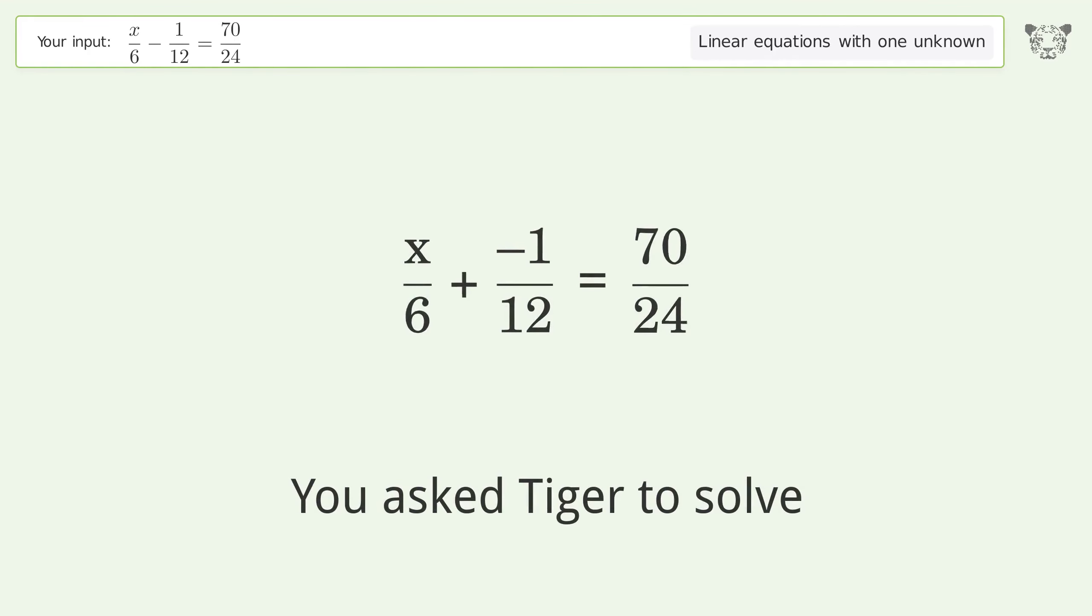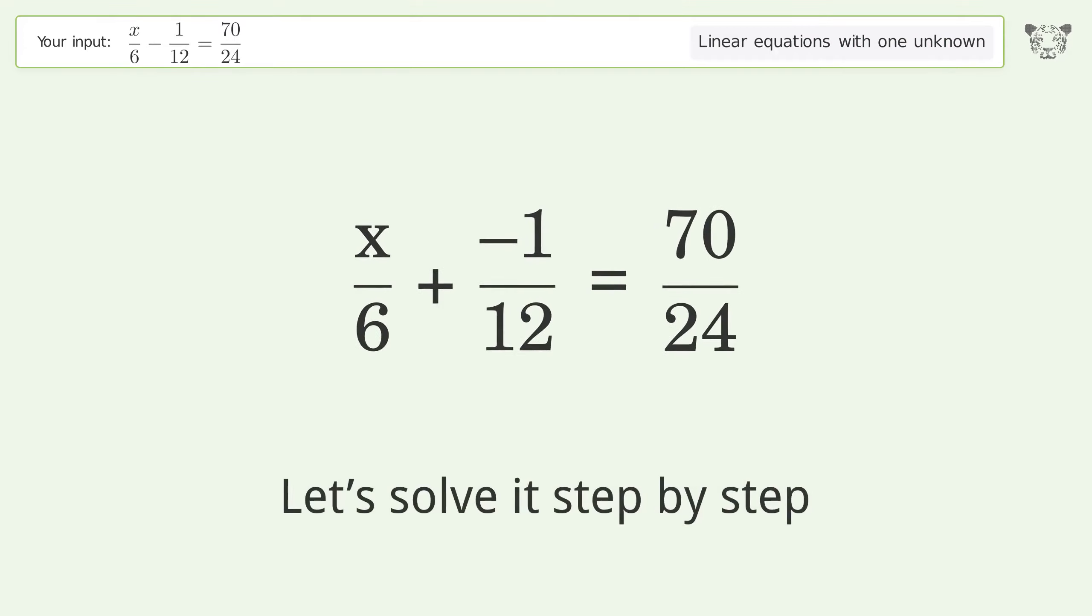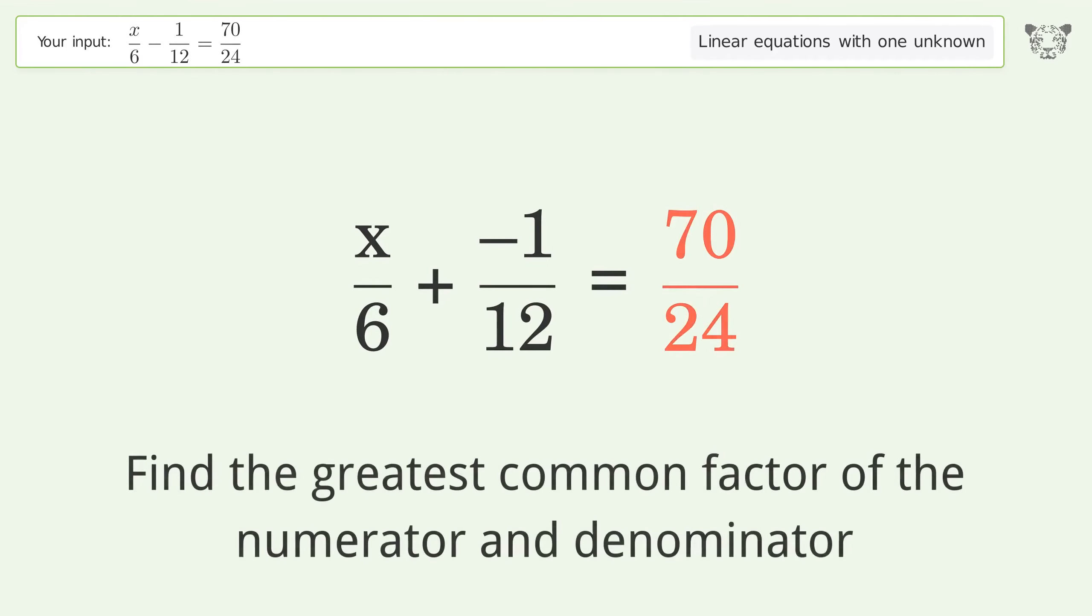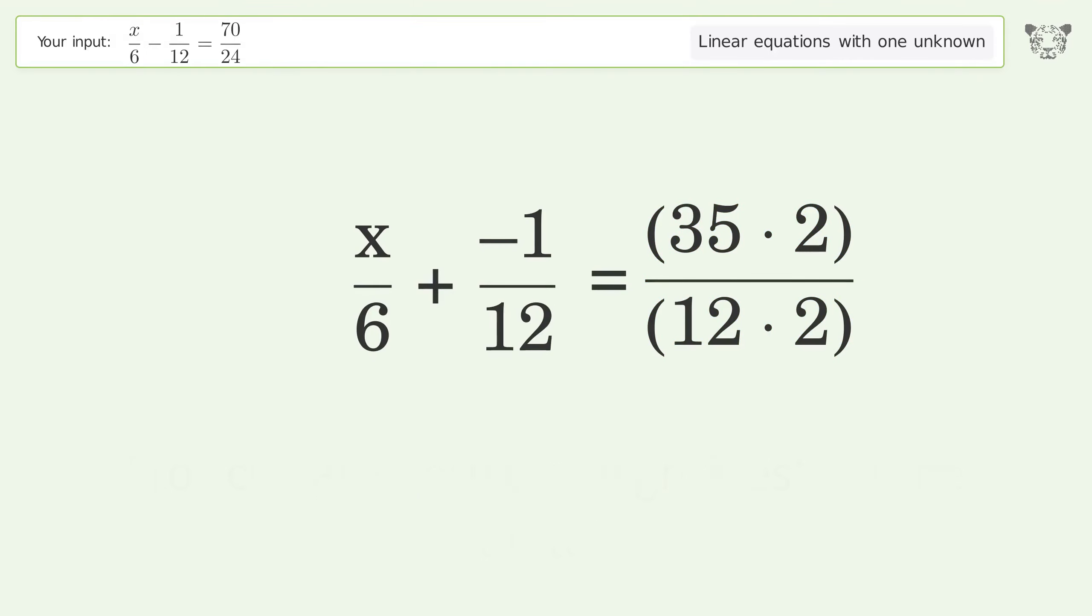You asked Tiger to solve this. It deals with linear equations with one unknown. The final result is x equals 18. Let's solve it step by step. Simplify the expression. Find the greatest common factor of the numerator and denominator. Factor out and cancel the greatest common factor.